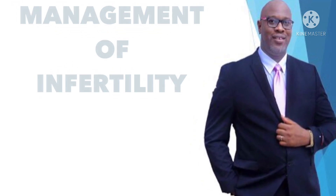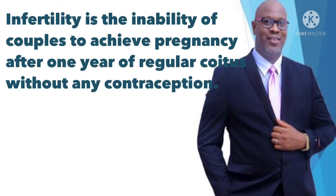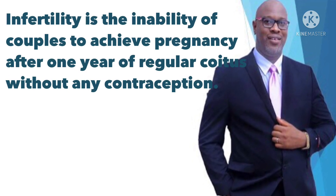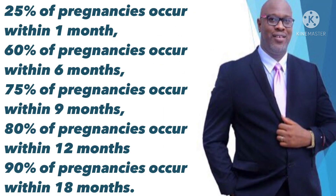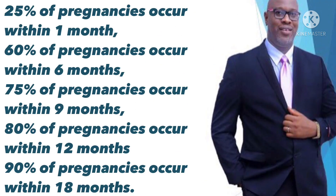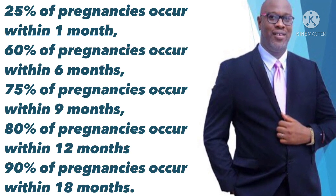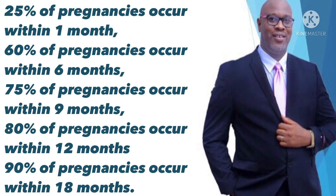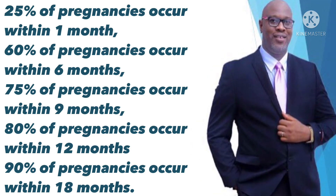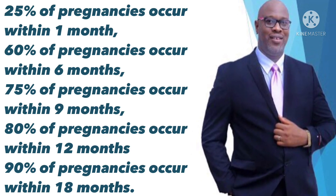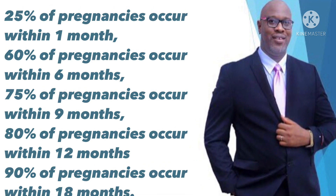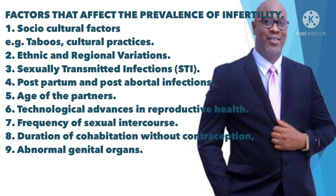Infertility is the inability of couples to achieve pregnancy after one year of regular coitus without any contraception. Recent studies show that 25% of pregnancies occur within 1 month, 60% within 6 months, 75% within 9 months, 80% within 12 months, while 90% of pregnancies occur within 18 months. Factors that affect the prevalence of infertility: